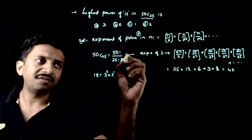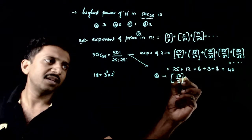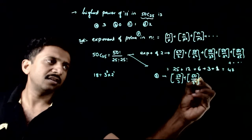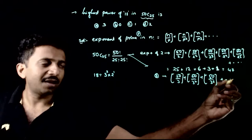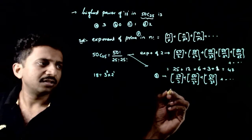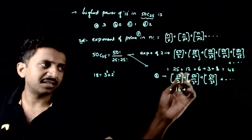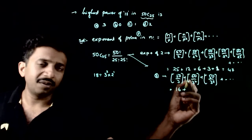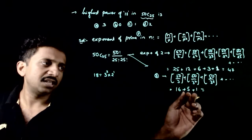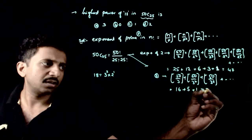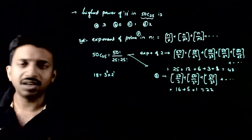What is the exponent of 3 in 50!? Using the same formula: floor(50/3) + floor(50/9) + floor(50/27) + ... After 3³ = 27, all terms become 0. That gives 16 + 5 + 1 = 22. So in 50! you have 2^47 × 3^22.